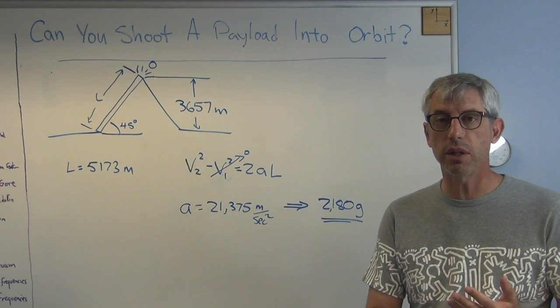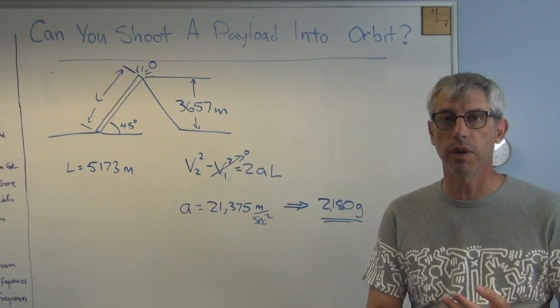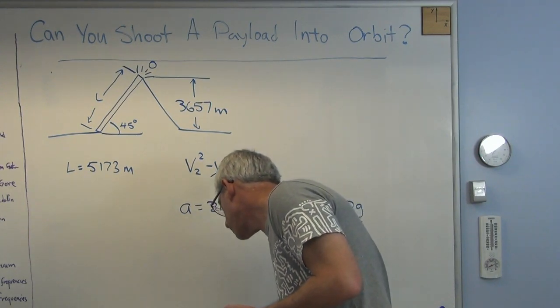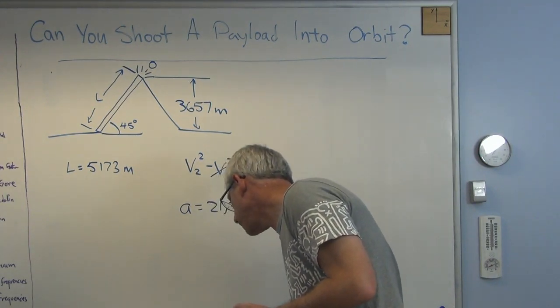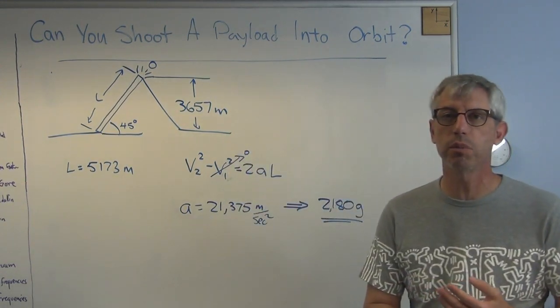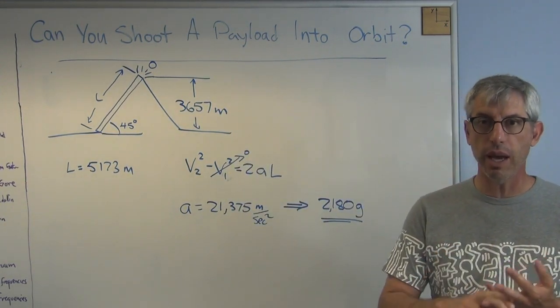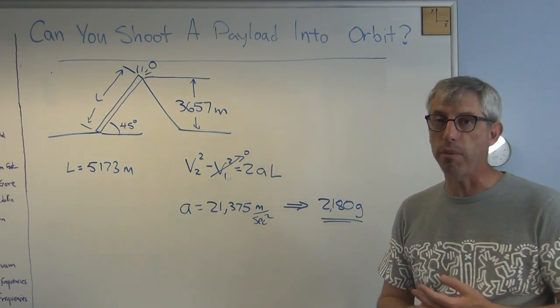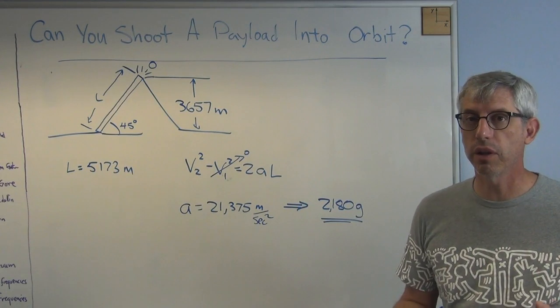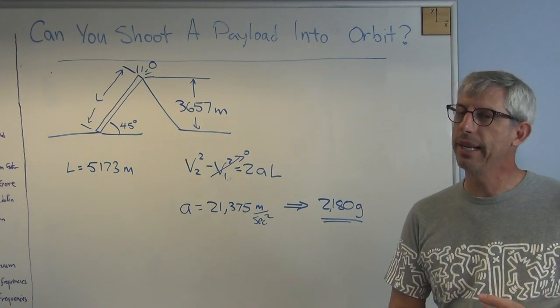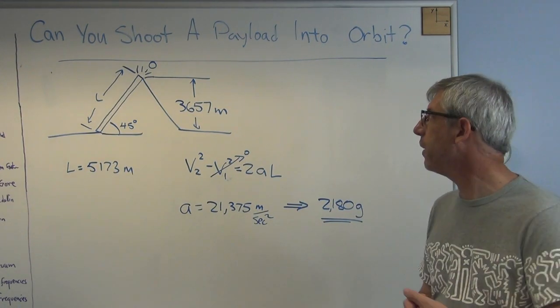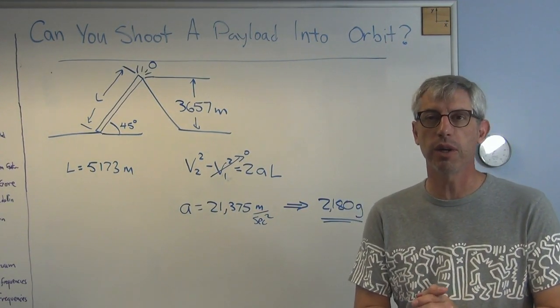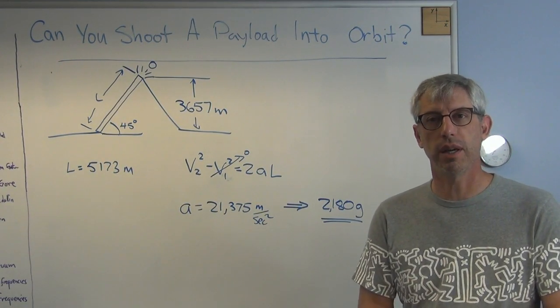These two numbers are just a deal breaker. You can't punch a payload through the atmosphere at 14,870 meters per second and you can't make a payload that will withstand that many g's and still function as a satellite when it gets to orbit. It's too bad. I know it seems like it ought to work, but it just isn't going to happen. So there you go. Sorry I don't have better news for you, gang. I hope this helps and I'll see you next time.